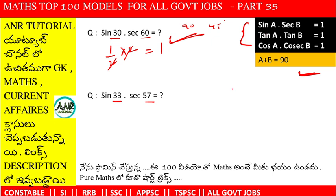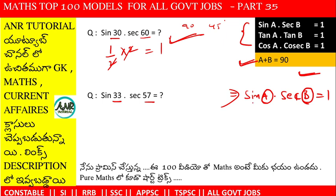The first formula is: sin a into secant b is equal to 1. This is the first example using the values method. If you have the values method, you don't need the formula directly.